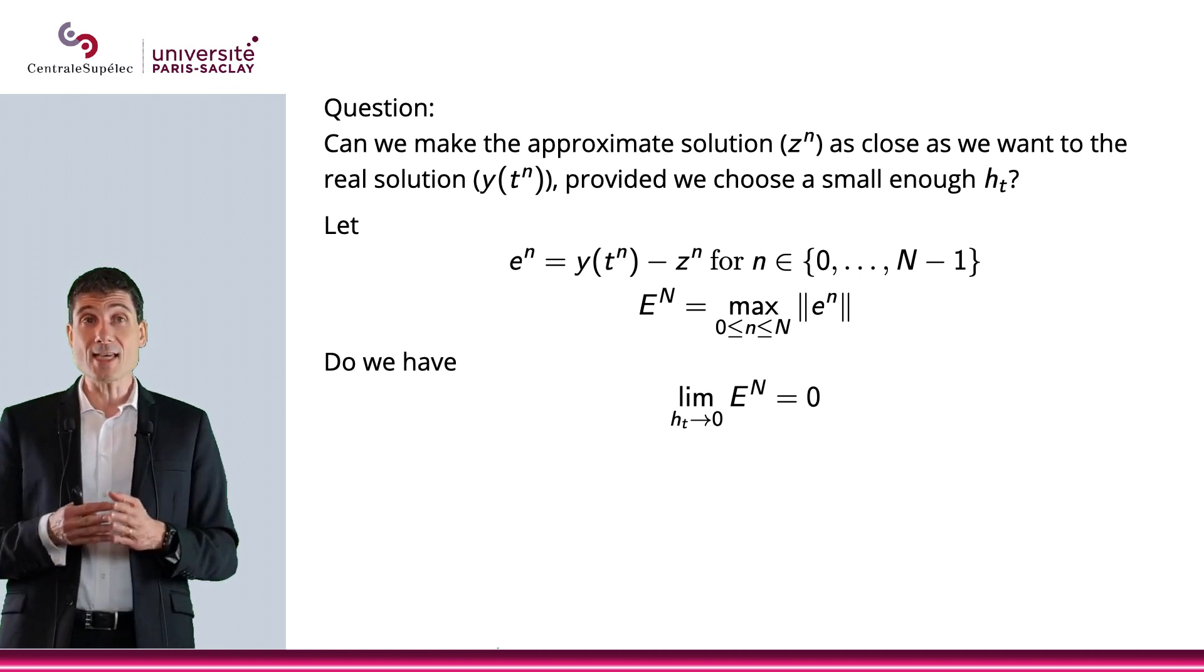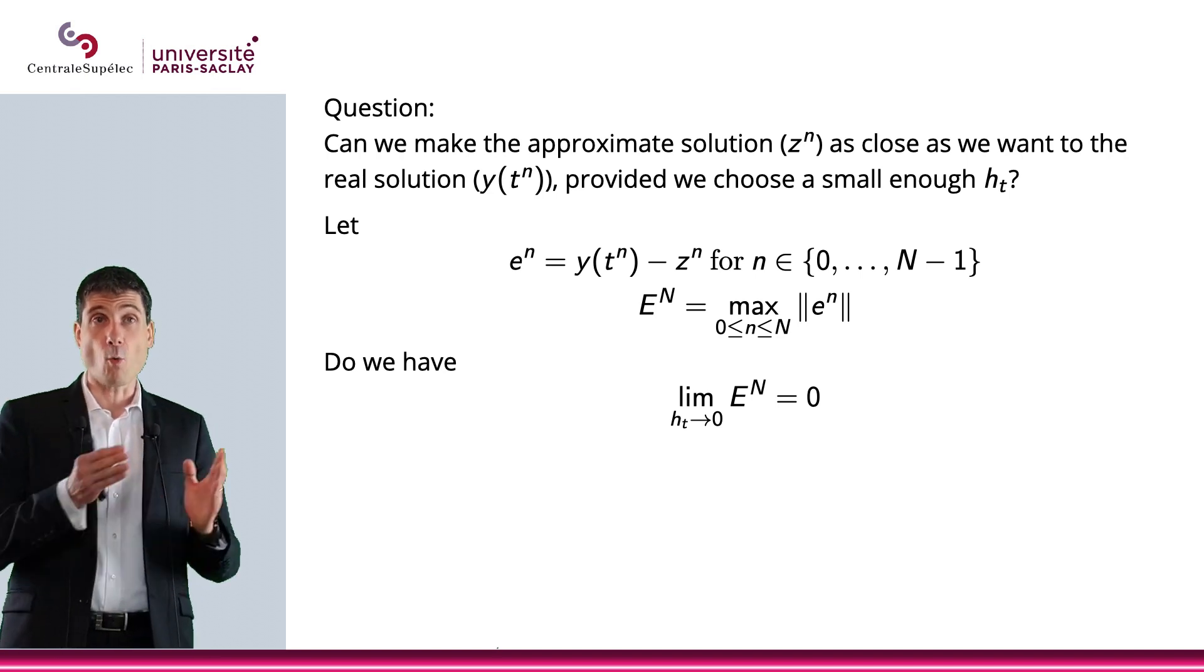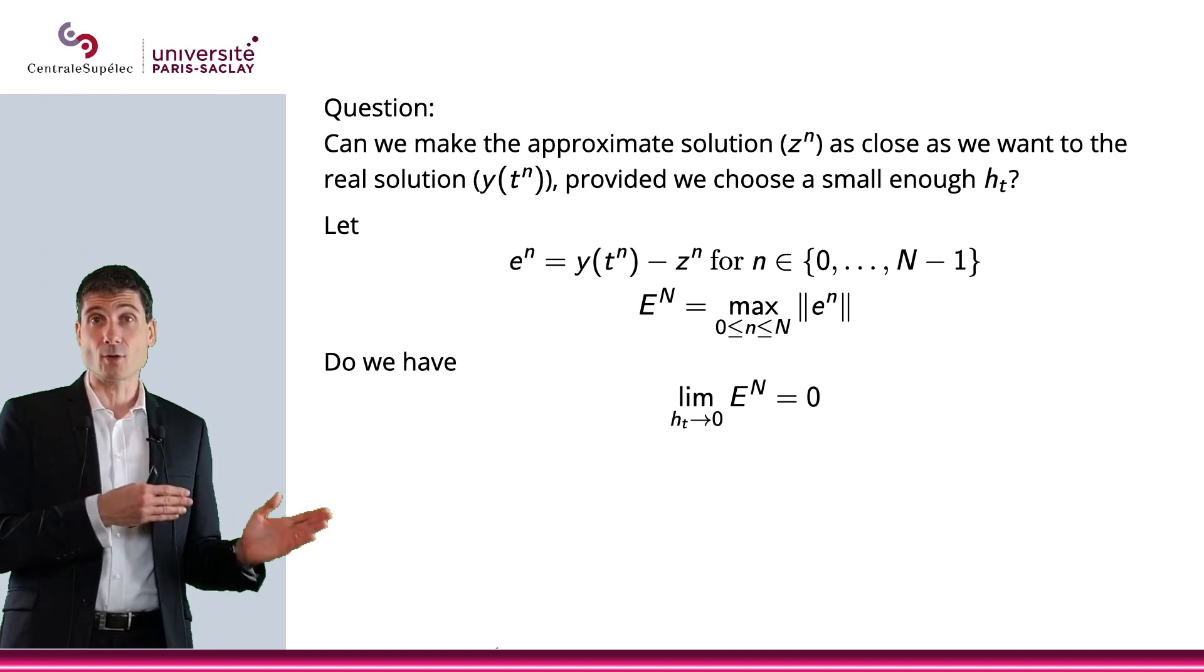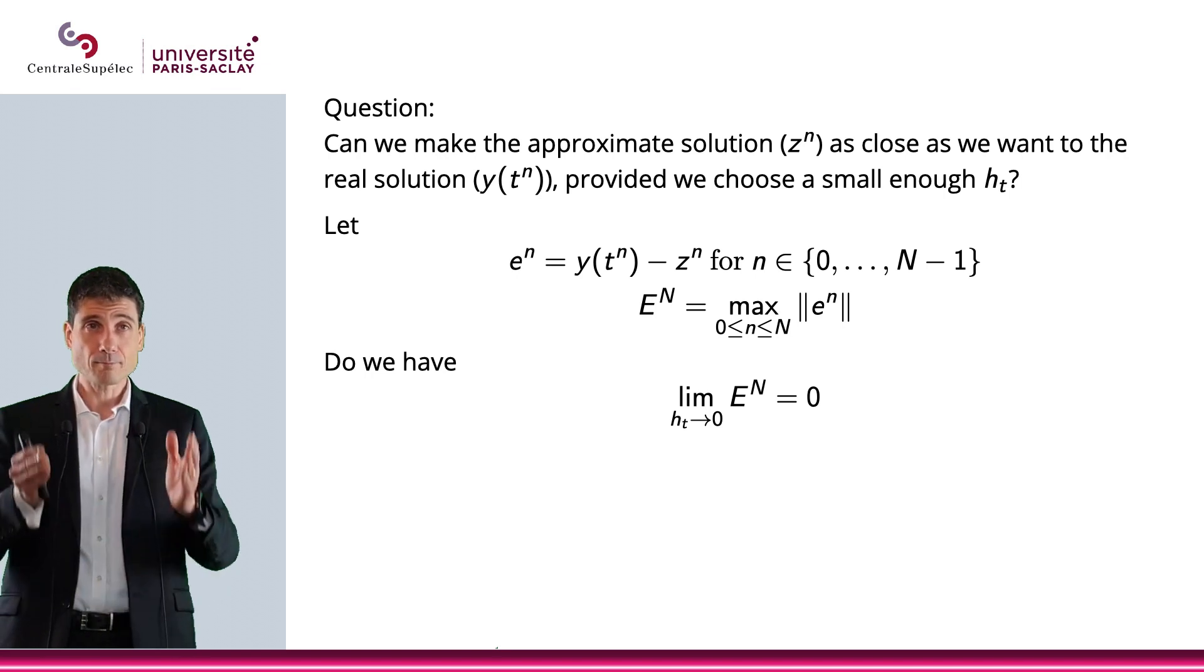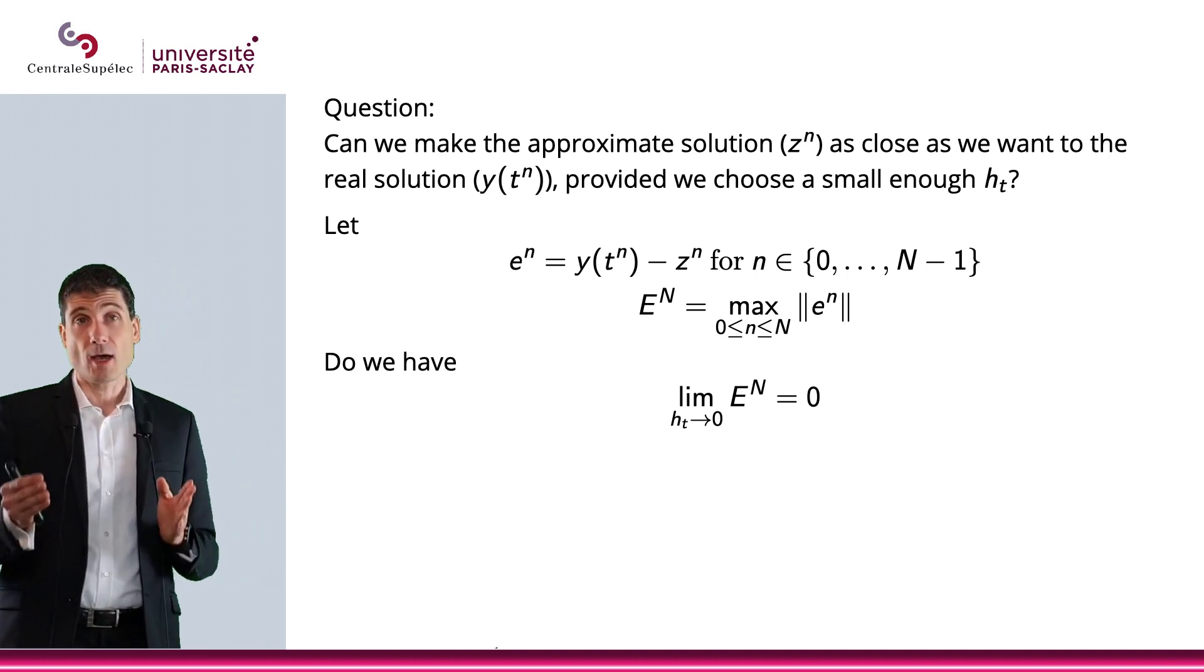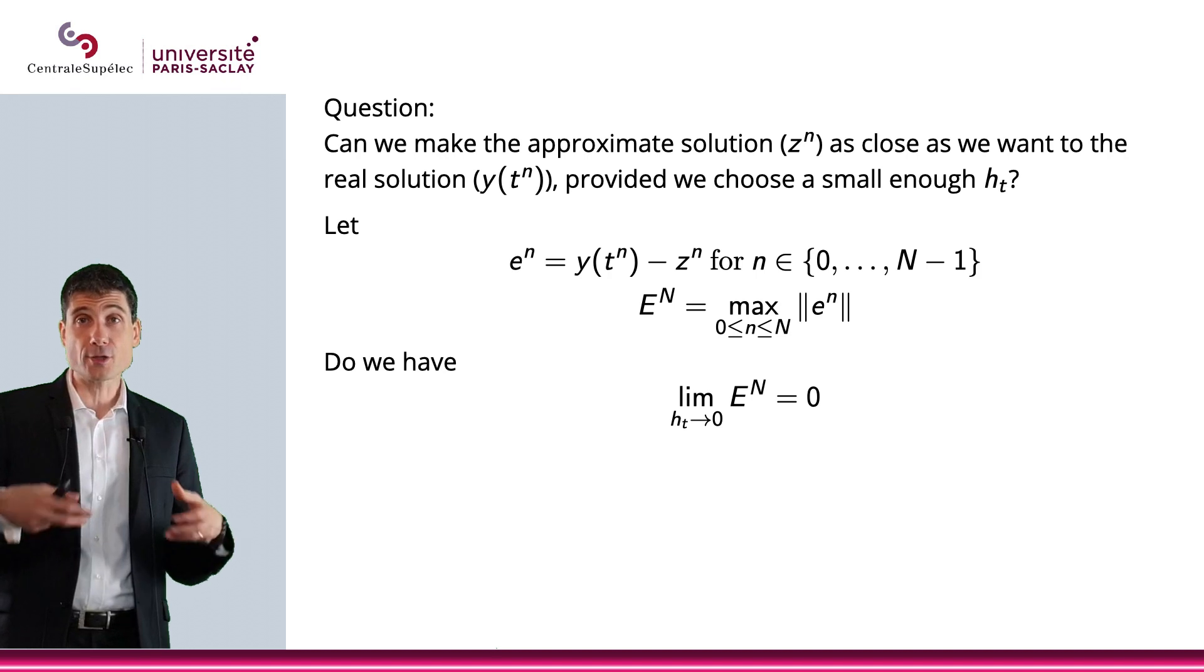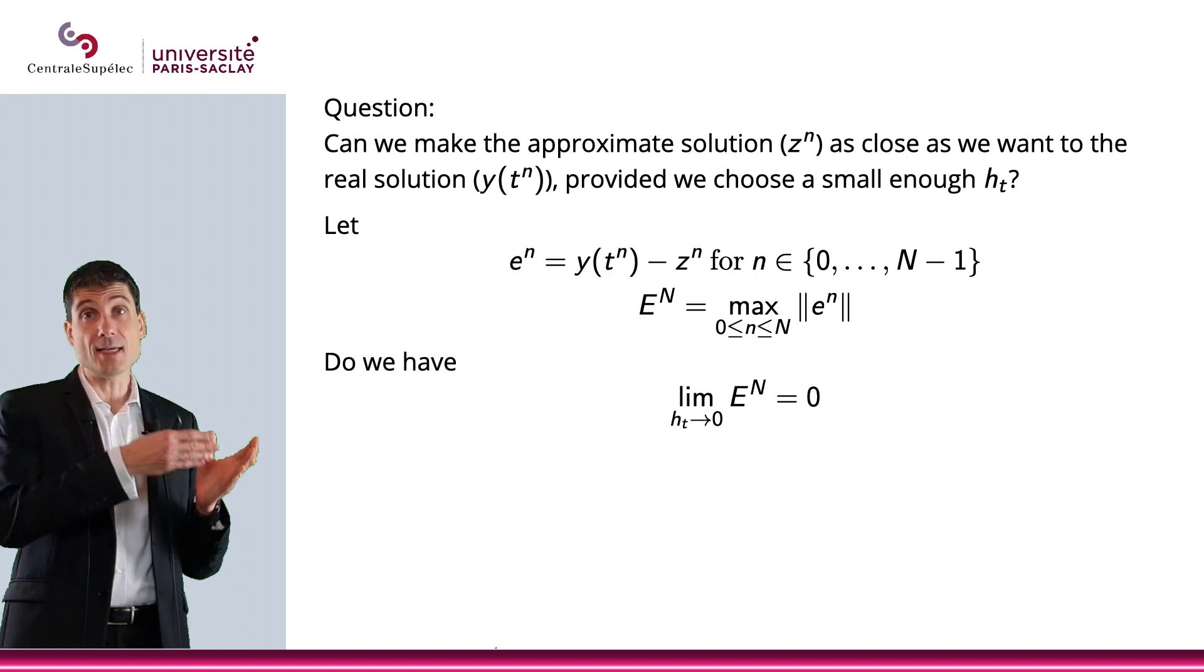First, we'll call En, small e, the difference between Y of Tn and Zn. So that was the fourth column in the previous slide. And capital E, capital N, will be the maximum error I can have on the n plus 1 first terms of my approximation. So E0, obviously, will be, normally it should be 0.